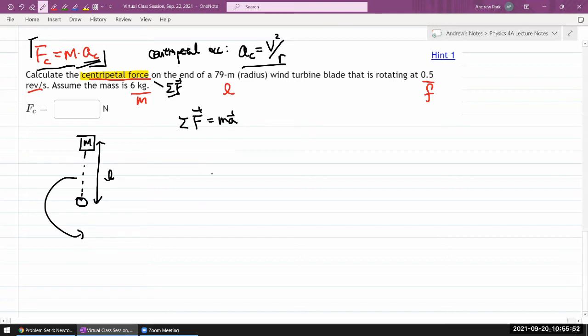So centripetal force is simply going to be given by mass, the given mass times the—I don't have V. Okay, I need to figure through that. So some sort of V squared over R. So I need to figure this V portion.